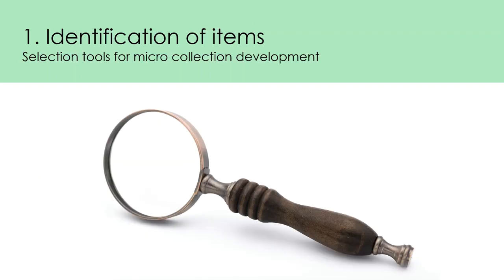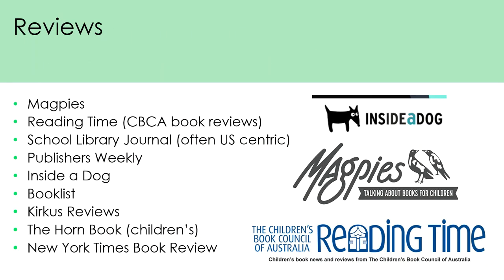Let's take a look at the first phase — identification of items — and talk about some of the selection tools available for micro selection. Reviews are useful tools for micro selection, and there are various different types of review sources that a librarian can use in developing a collection.